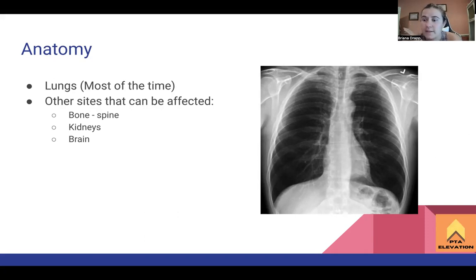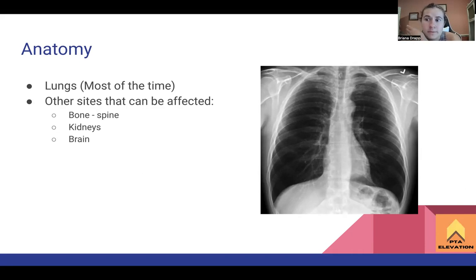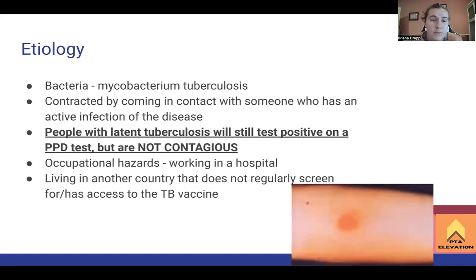Tuberculosis most of the time affects the lungs, but it can affect other parts of the body. You'll see this show up more often in underdeveloped countries where it appears in the spine. Tuberculosis in the spine involves the same bacteria - mycobacterium tuberculosis - but it ends up in the spine. It can also affect the kidneys and the brain.